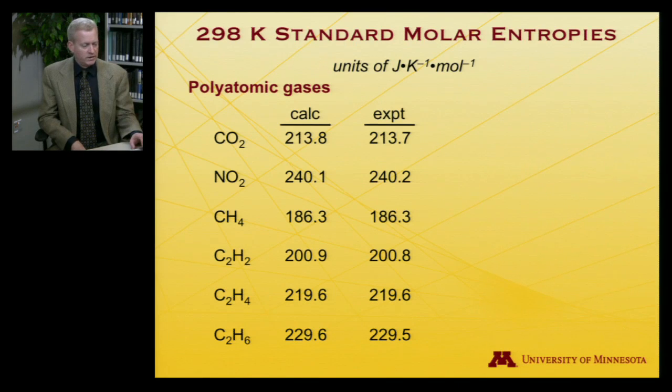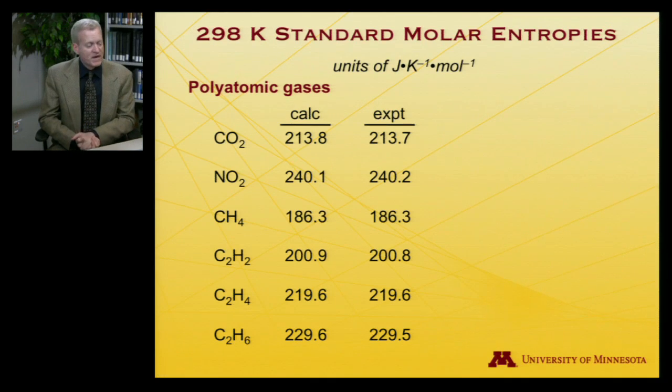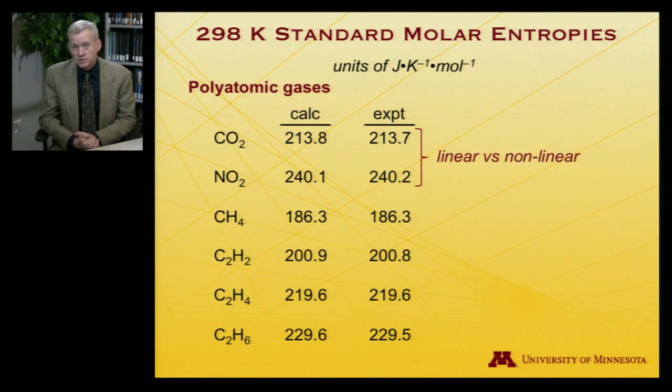Looking at trends: CO2 and NO2 weigh very nearly the same — carbon has mass 12, nitrogen mass 14 — yet there is a difference of about 26.5 joules per Kelvin per mole in their entropies. The reason is that carbon dioxide is a linear molecule with only two rotational degrees of freedom, while nitrogen dioxide is a bent, nonlinear molecule with three rotational degrees of freedom. That extra rotational degree of freedom, with closely spaced energy states, contributes to substantially higher entropy.